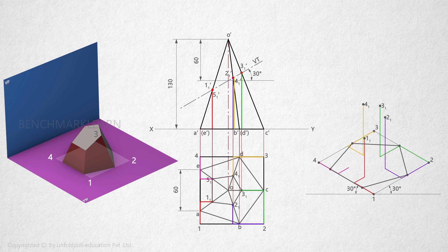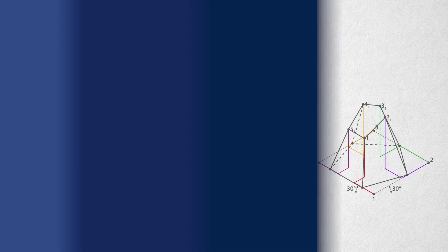Measure the height and mark on the vertical drawn from the point to get 5-1. Connect all the points to get the isometric view of the remaining portion.